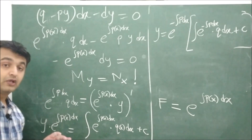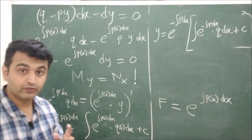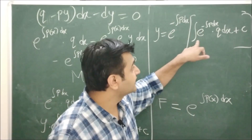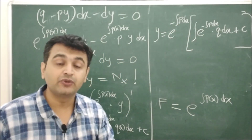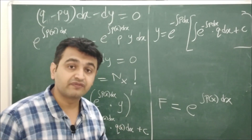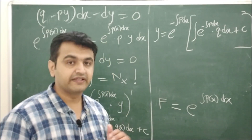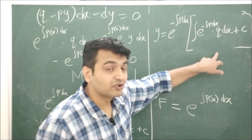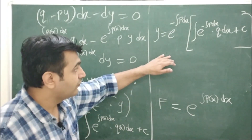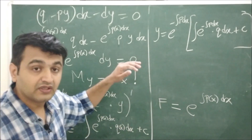This is the complete solution to the first-order non-homogeneous linear differential equation. The continuity of P and Q is required because we are taking integrations — continuity guarantees the integrals exist, as proved by Riemann: a continuous function is always integrable. This completes the proof.